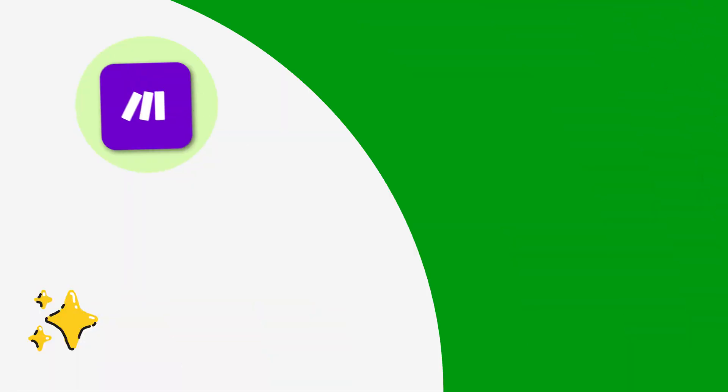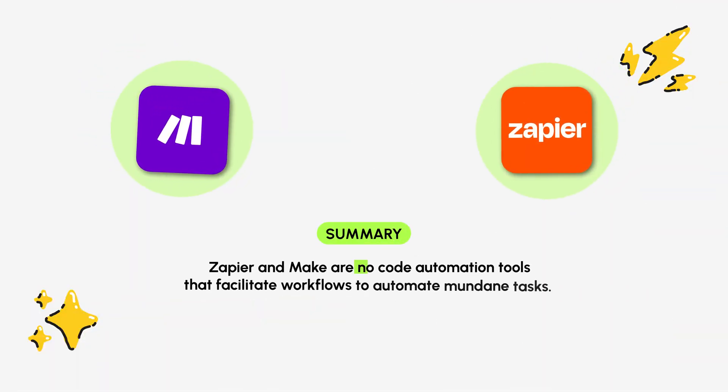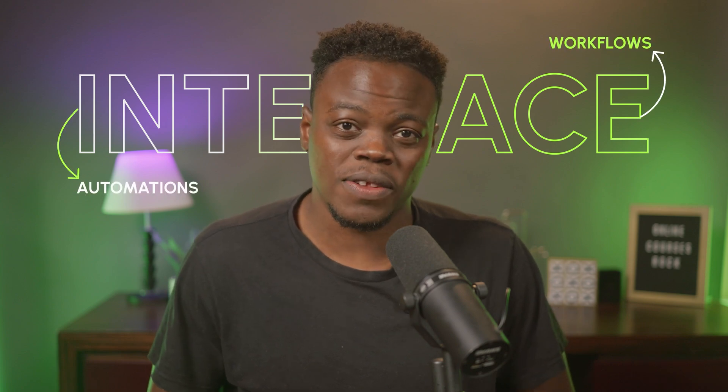If you're watching this, you perhaps already have an idea of what these tools do. But in summary, both Zapier and Make are no-code automation tools that facilitate workflows to automate mundane tasks. However, when it comes to the interface, both tools take very different paths to creating automations and workflows.